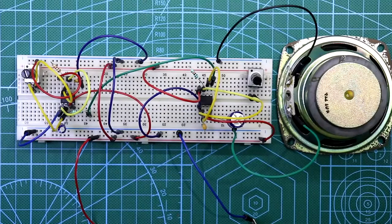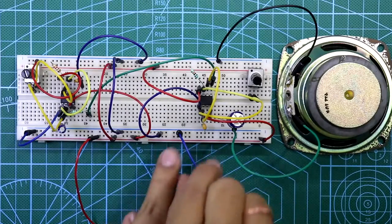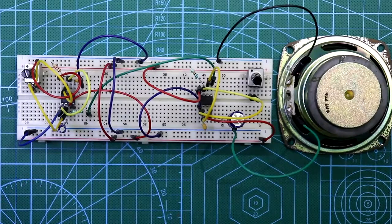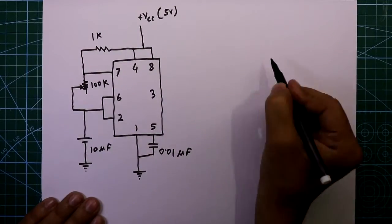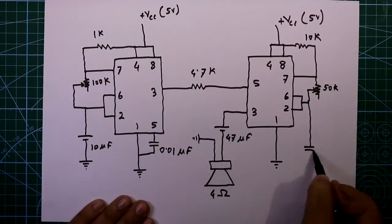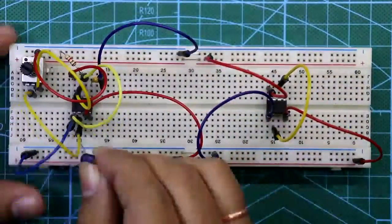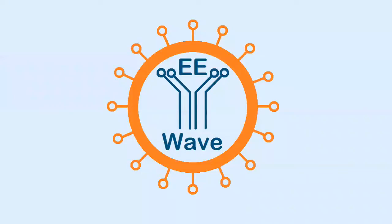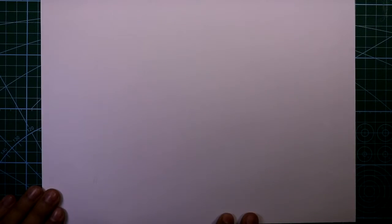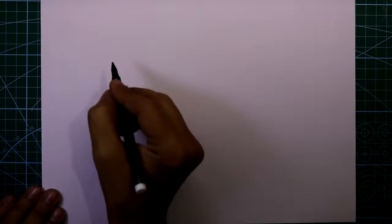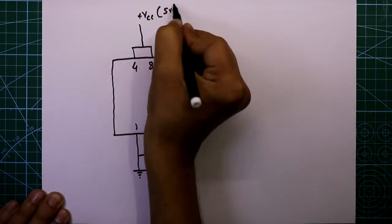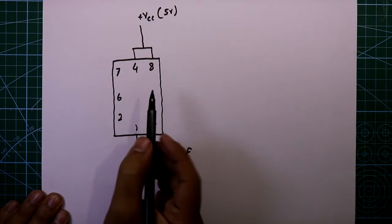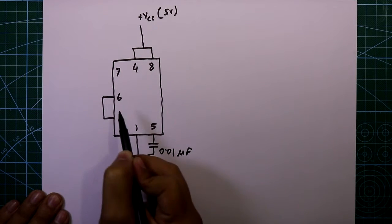Hello guys, today I am going to show you how to generate ambulance sound with a 555 IC. Let's get started. Now see the circuit diagram — we have to operate this IC in astable mode, so connect this.